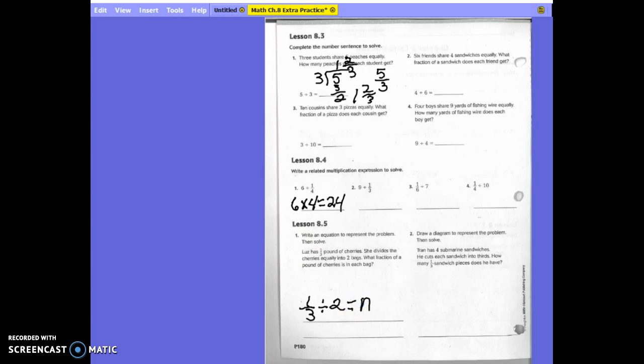Then we can put this over our reciprocal. So we have 1 third over our denominator. We're changing our process there. Write your reciprocal to equal 1 sixth pound. I need to see this process on number 2.